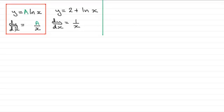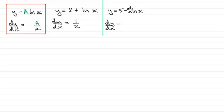So if we had y equals 5 minus 2 times the natural log of x, then dy/dx: the constant 5 goes to 0, and the constant here is minus 2 multiplied by the natural log of x. So you're just going to get minus 2 over x.